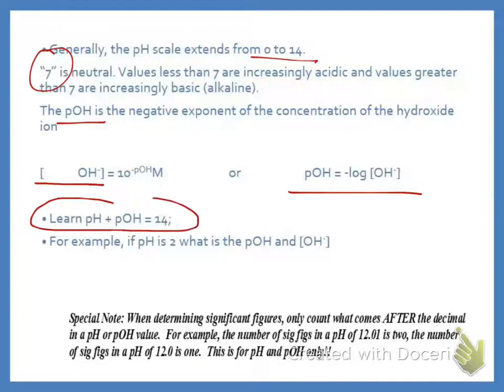Together, pH plus pOH is equal to 14. That's going to be very important because if we know one of these things, we can find the other three components. So if I have a pH of 2, that means my pOH would be 14 minus 2, so my pOH would be 12.